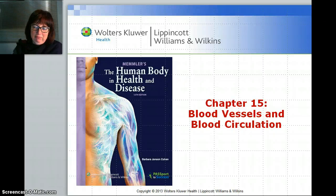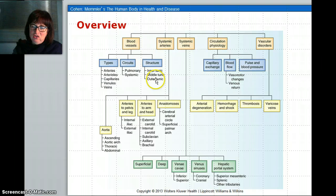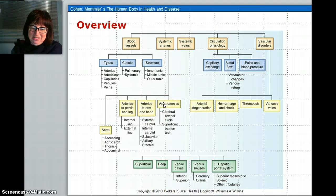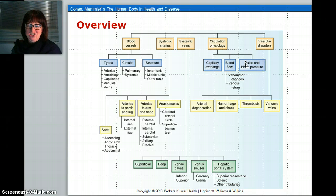Hello and welcome to Chapter 15, Blood Vessels and Blood Circulation. In today's video we're going to look at blood vessels in terms of the types and how they're different structurally, do an outline of the pulmonary and systemic system, look briefly at the arteries focusing mainly on the ones that have anatomical positions, look at the veins, a little bit about circulatory exchange and blood flow, a little bit about blood pressure, and then just touch on the vascular disorders.